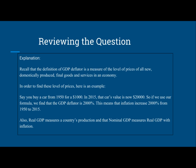Now we're going to take a look at — let's review the question. Recall that the definition of a GDP deflator is a measure of the level of prices of all new, domestically produced, final goods and services in an economy. Now in order to find the level of prices, let's have an example. Say you buy a car from 1950 for $1,000. In 2015, that car's value is now $20,000.